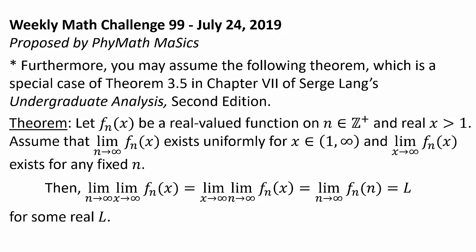The second assumption is a theorem, actually a special case of Theorem 3.5 in Chapter 7 of Serge Lang's Undergraduate Analysis. The theorem is: let f sub n of x be a real-valued function on positive integer n and real x greater than 1. Assume that the limit as n goes to infinity of f sub n of x exists for any fixed n.